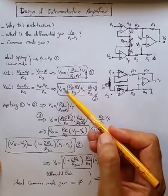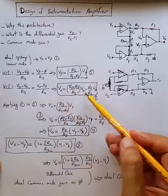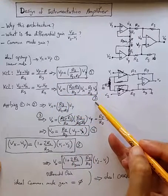So from there, we can get this relationship between Vout, Vn, and Vx. That's equation three.